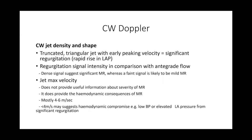Continuous wave Doppler is very important and simple, providing a lot of information. Two main things to assess are the profile of the Doppler signal and its density. In terms of profile, a truncated triangular jet with early-peaking velocity suggests significant regurgitation due to rapid rise in left atrial pressure. In terms of density, compare it to the antegrade flow — a dense signal suggests significant MR, while a faint signal suggests mild MR.